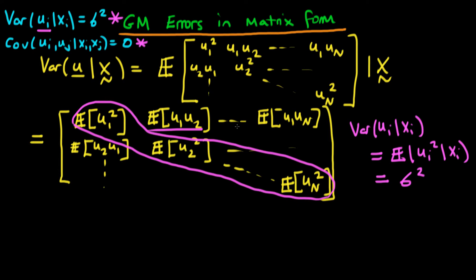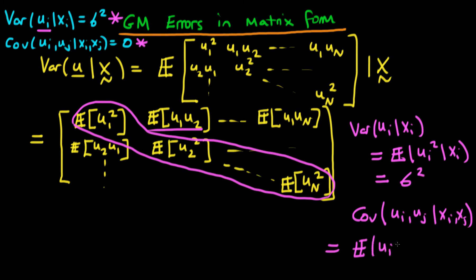What about the off-diagonal components? Well, in terms of our condition of no autocorrelation, we require the covariance of u_i with u_j to be equal to zero. The covariance of u_i with u_j can be written in a very similar form to the variance: the covariance of u_i with u_j given x_i and x_j is equal to the expectation of u_i times u_j given x_i and x_j, because we're assuming that the individual expectations of u_i and u_j are both equal to zero. These are what we have in our matrix as the off-diagonal components, and in order to have no autocorrelation we require each of these off-diagonal components to be equal to zero.